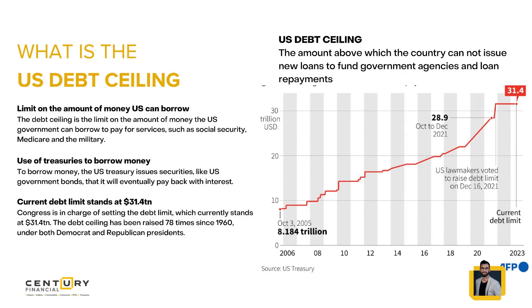Let's understand what the term 'debt ceiling' actually is, because it's been in the news almost every day — stocks remain mixed ahead of the US debt ceiling decision, gold prices went up ahead of the debt ceiling decision. It's not the first time, so today we'll discuss how in the past the debt ceiling issue has occurred. Basically, the US debt ceiling is the limit on the amount of money the US government can borrow to pay for services like military, defense, Medicare, or social security.